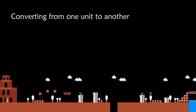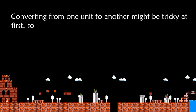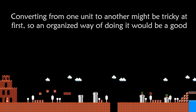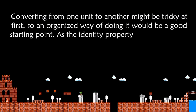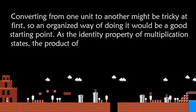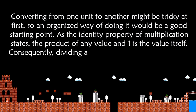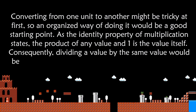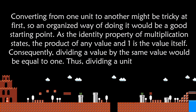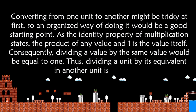Converting from one unit to another might be tricky at first, so an organized way of doing it would be a good starting point. As the identity property of multiplication states, the product of any value and one is the value itself. Consequently, dividing a value by the same value equals 1, thus dividing a unit by its equivalent in another unit is also equal to 1.